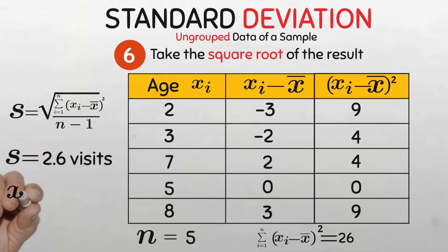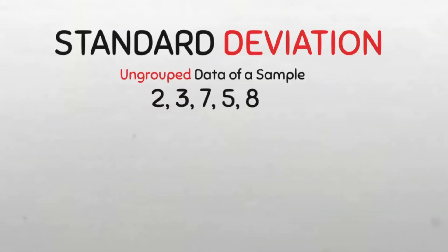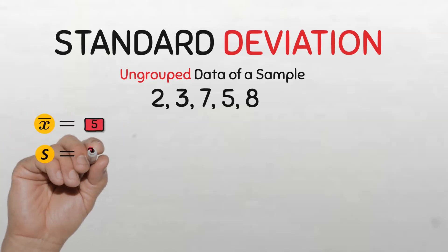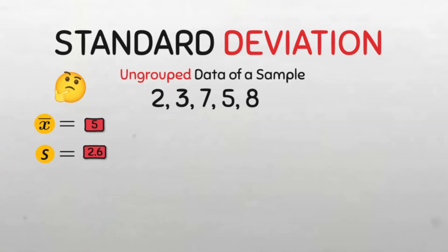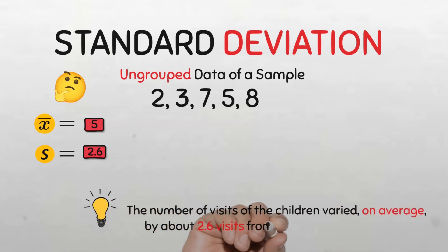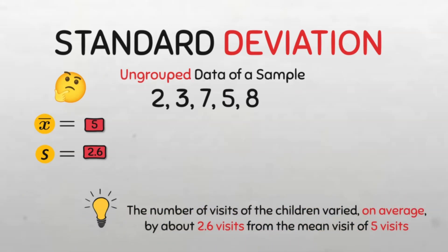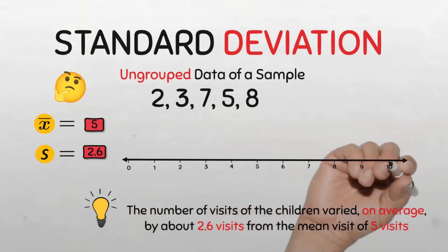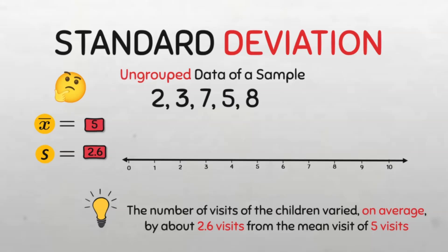Remember our mean number of visits was five visits. Looking at our data on the number of visits of children to the training center, what does a mean of five visits and a standard deviation of 2.6 visits imply? It indicates that the number of visits of the children to the center varied on average by about 2.6 visits from the mean number of five visits.